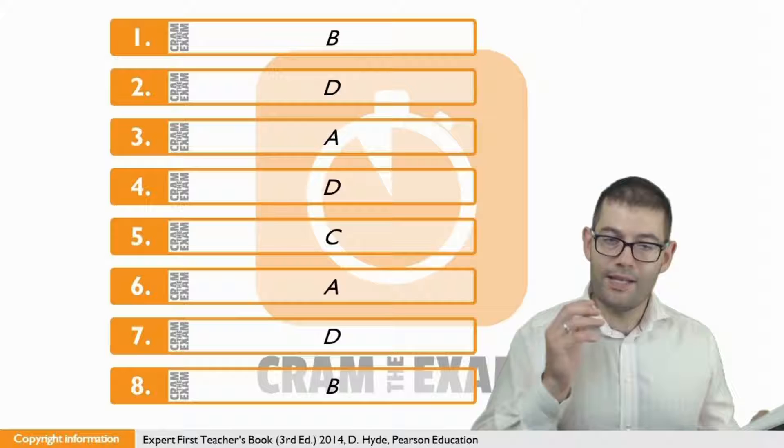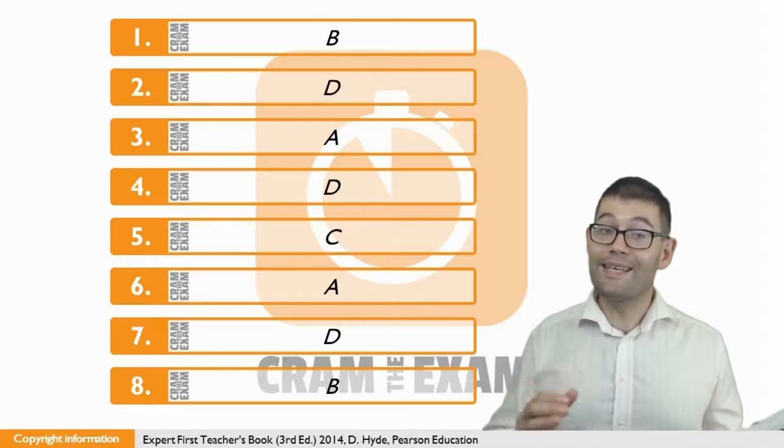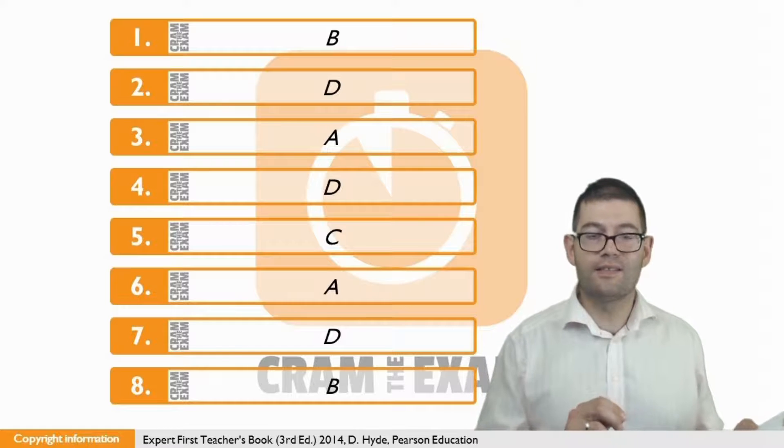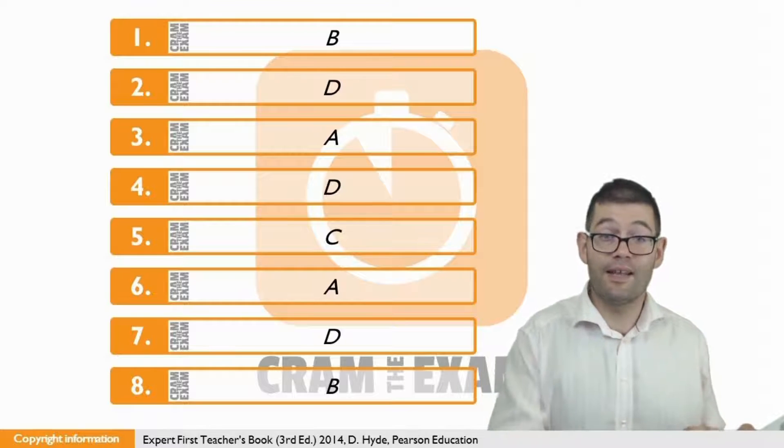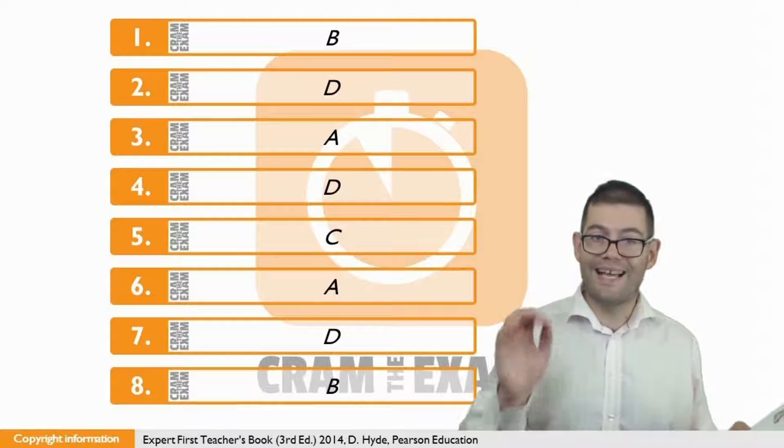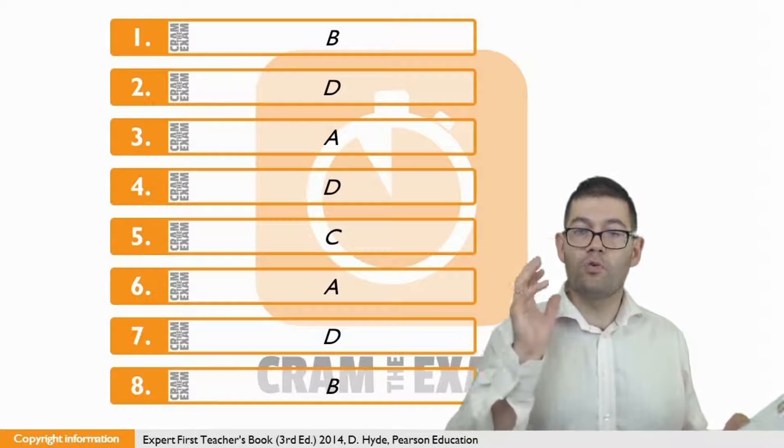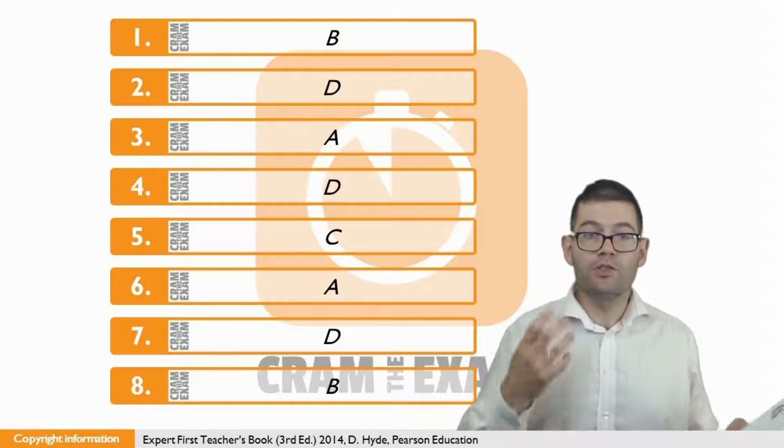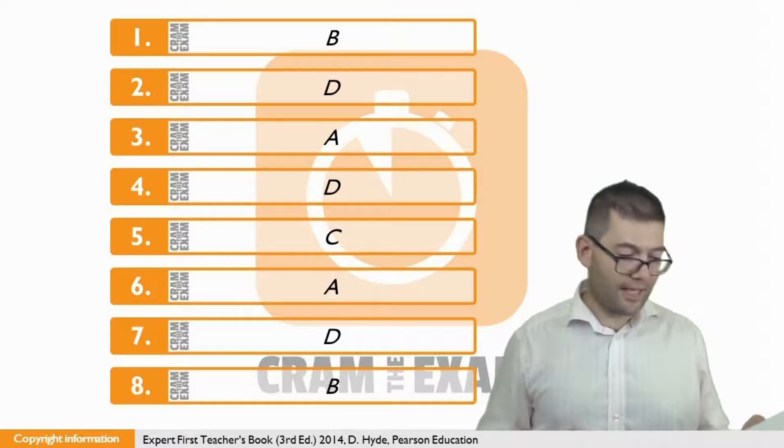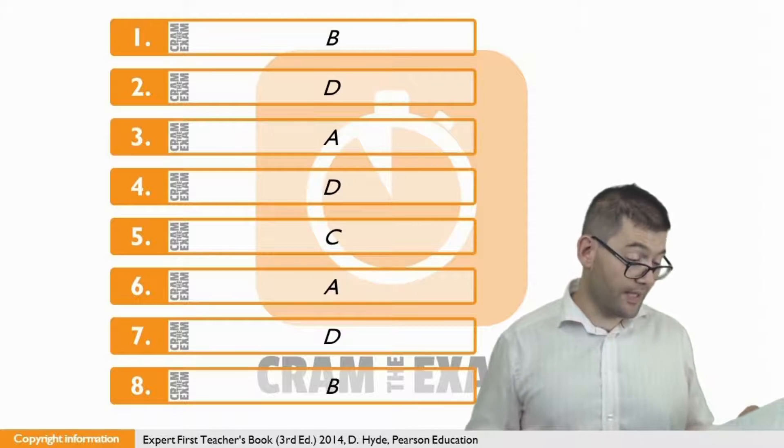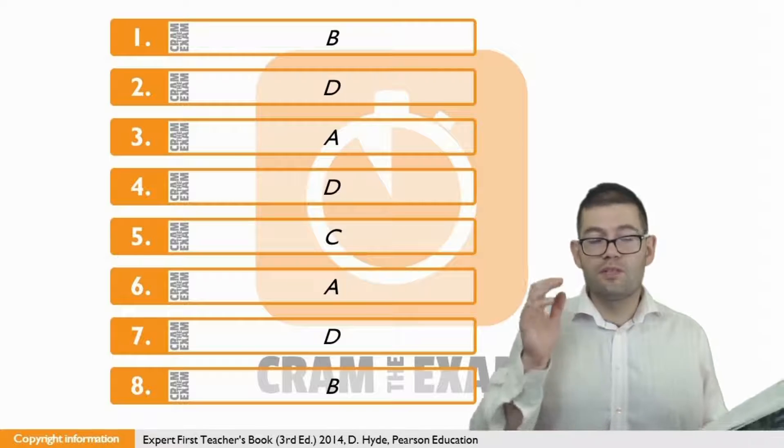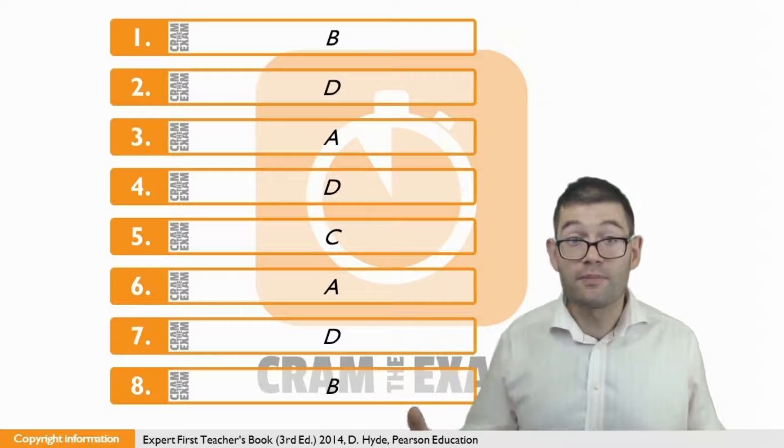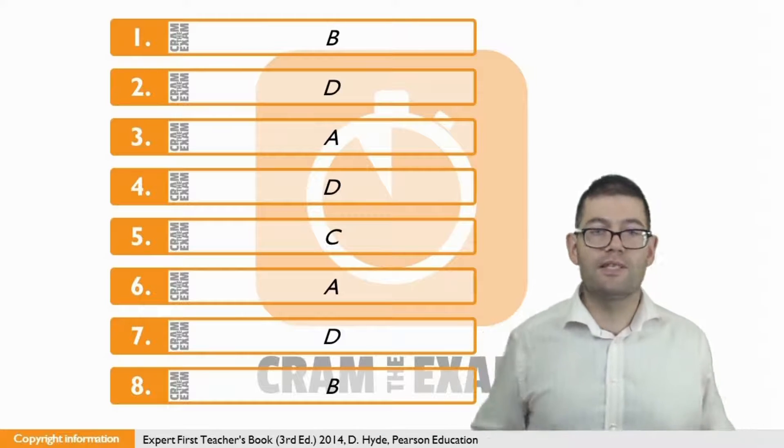The question for only one of the answers actually fits this particular language pattern with the preposition as after the gap. All of the other answers require different language patterns. So what is this one answer that is the correct answer? It is regarded, which is brilliant because regarded as means the same as believed to be, which is exactly what this sentence is trying to say.